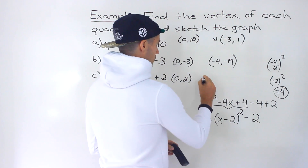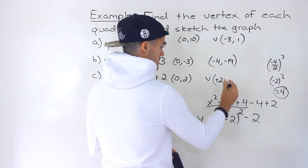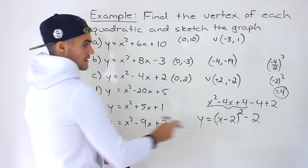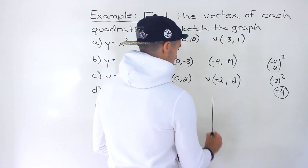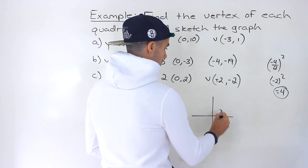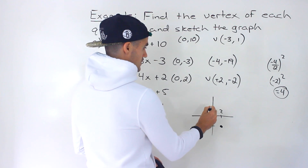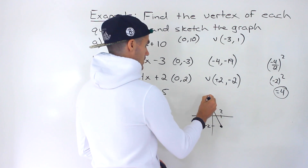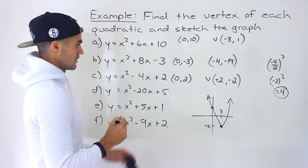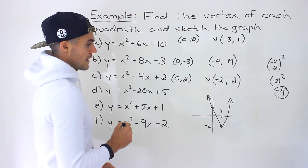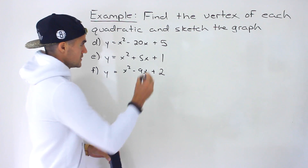We get (x − 2)² and then −4 + 2 = −2, giving vertex form (x − 2)² − 2. The vertex is (2, −2) — opposite sign. Sketching: vertex at (2, −2) and y-intercept at (0, 2) up here, giving a quadratic that looks like that.